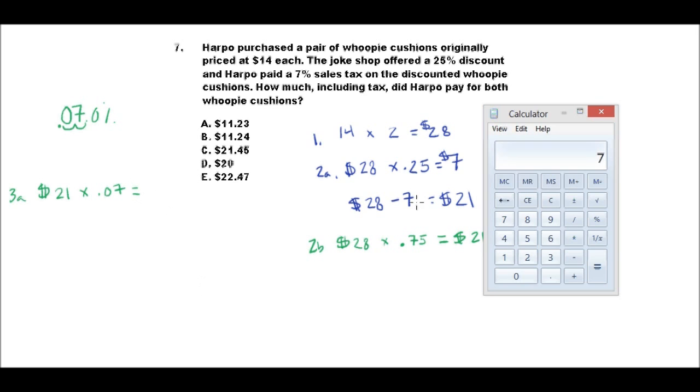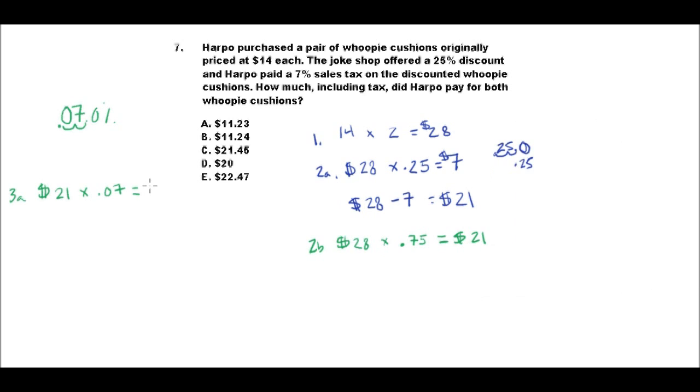And let's see what that is. So 21 times .07 equals $1.47, $1.47.